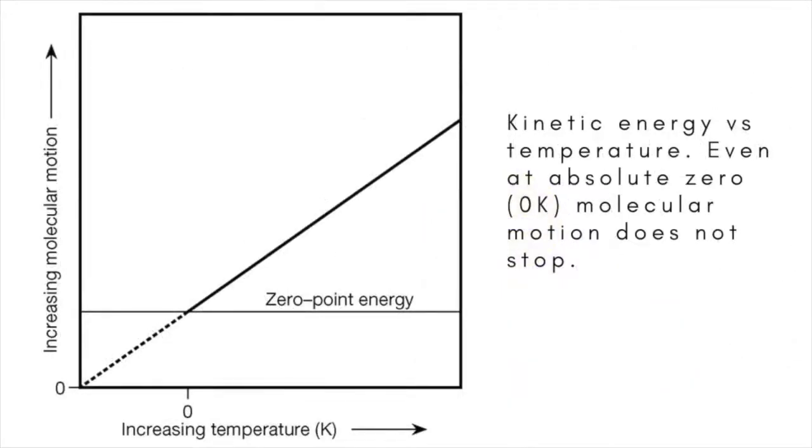Zero-point energy is the lowest possible energy that a quantum system can have. Unlike in classical mechanics, quantum systems constantly fluctuate in their lowest energy state as described by the Uncertainty Principle.